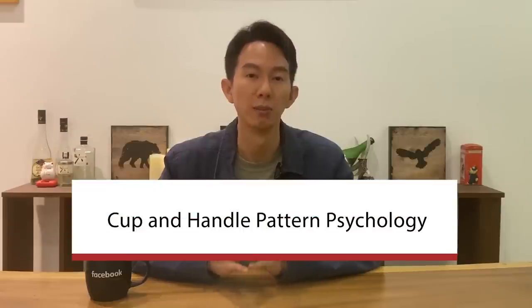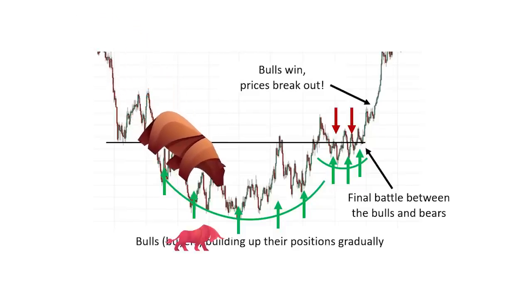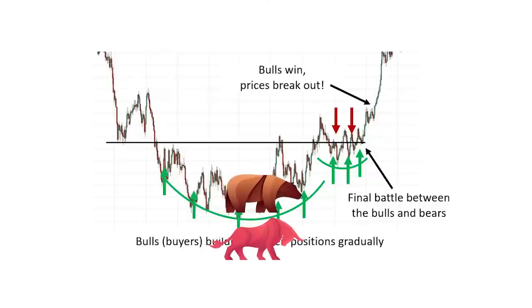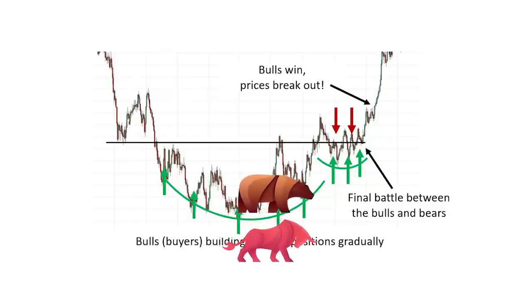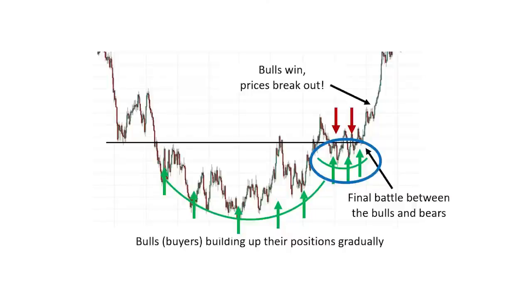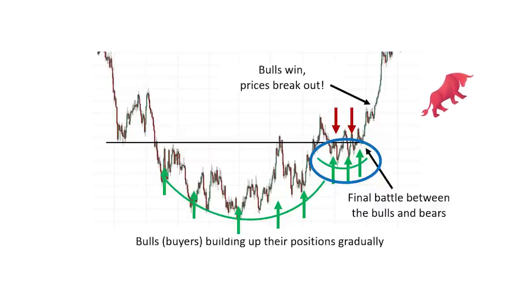What is the psychology of the cup and handle pattern? As the downtrend starts to weaken with fewer bears or sellers, the bulls and buyers start to take control by gradually accumulating more long positions. As they build up positions, we see a wide U-shaped bottom — the cup — where bulls and bears are almost balanced, suggesting the downtrend has been neutralized. In the final stage where the handle forms, this is the final battle between bulls and bears. By this time, the bulls have the upper hand from accumulating during the cup formation, attracting more buyers. Once the last bears are overcome, bulls take full control and the explosive price breakout takes place.